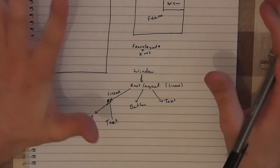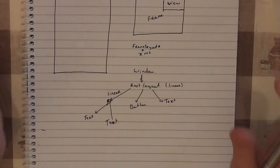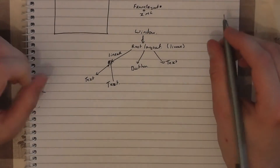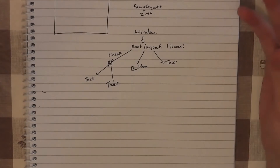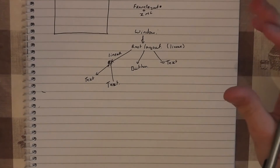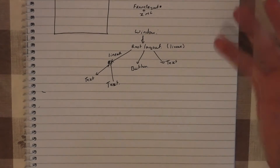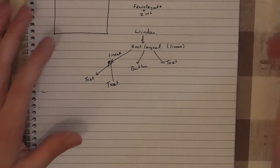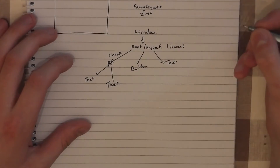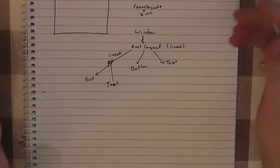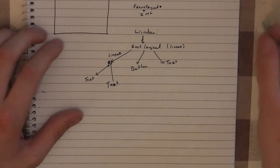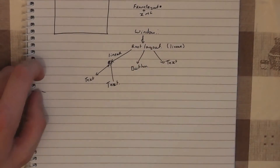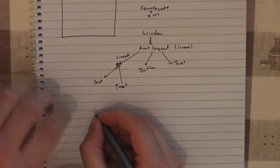The first thing we're going to talk about is a measure pass, and the measure pass is the more complicated of the two. What happens is that at some point the phone is going to say it needs you to draw. So the activity starts figuring its stuff out, and it requests the window to figure out the frame. The window talks to the root and asks it to measure parameters.